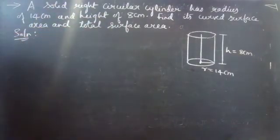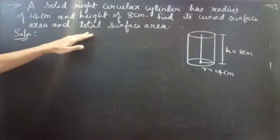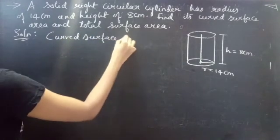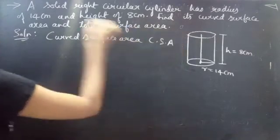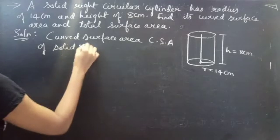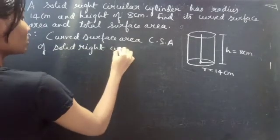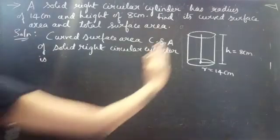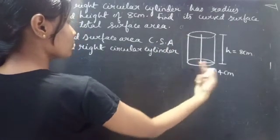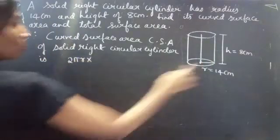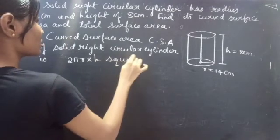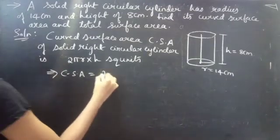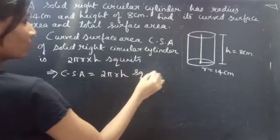So we are given the radius and height of a solid right circular cylinder. We are asked to find the curved surface area and total surface area. The curved surface area, CSA, of a solid right circular cylinder is the base circumference into height: 2πr × h square units. This implies CSA equals 2πrh, and units are in centimeters.